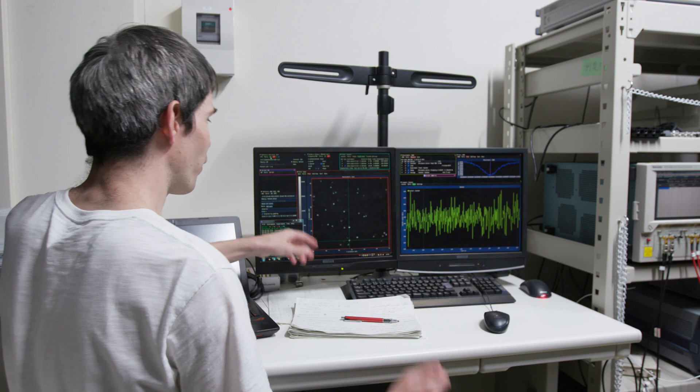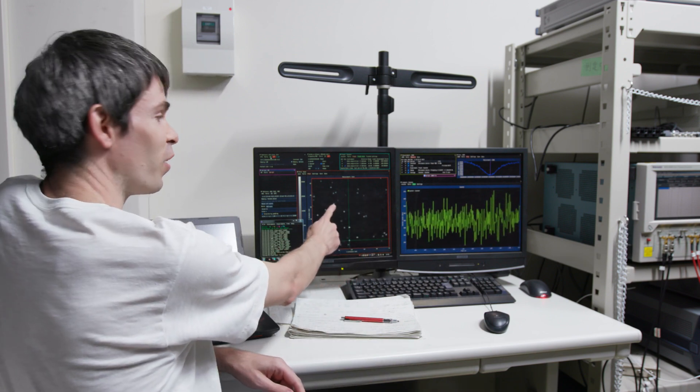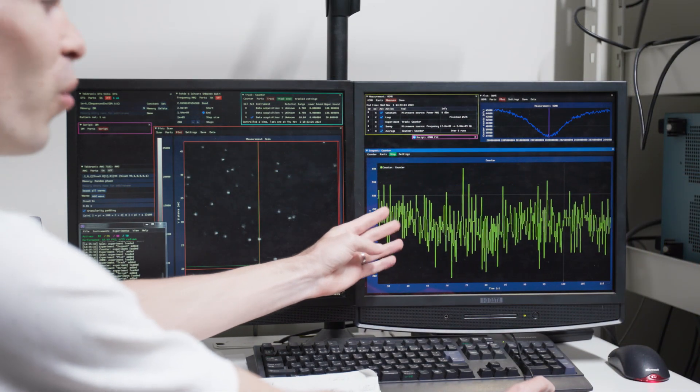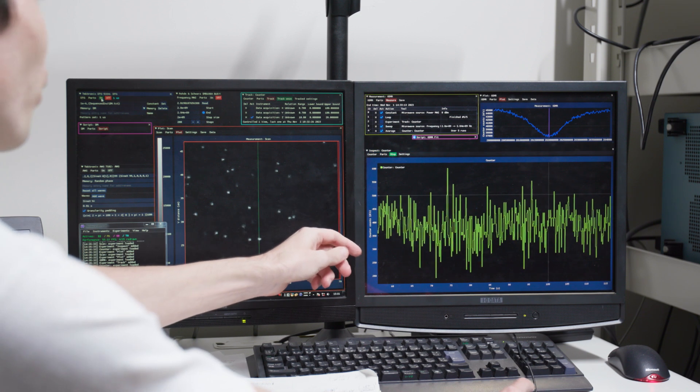So, here we control our system, and this is a scan of the sample, and each white dot is a single NV-center. Now, we choose this NV-center for our experiment, and in this graph, you can see how many red photons we detect. When we turn on the laser, you can see we detect many photons from the NV-center.